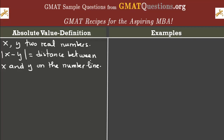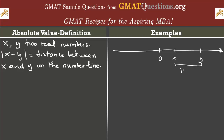We're talking about the number line as opposed, maybe, to the coordinate plane when you have x and y in a coordinate system. So if you have a line going from left to right, and we have 0 somewhere on the number line, we can have x here and y here. This distance between x and y is the absolute value of x minus y.